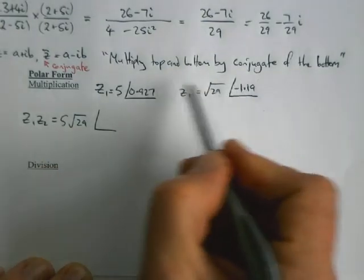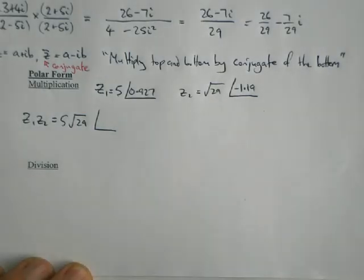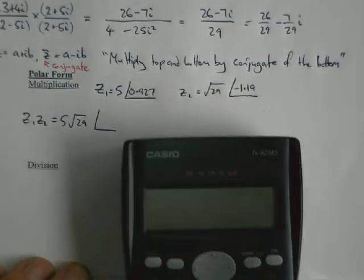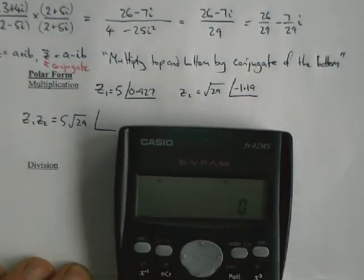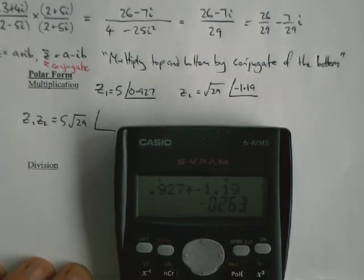What do we get? Let's bring a calculator in here. So adding 0.927 and negative 1.19, which is negative 0.263.